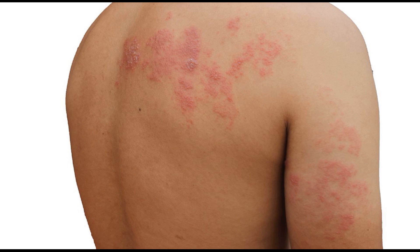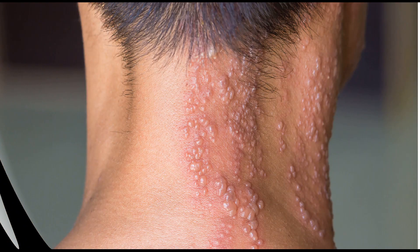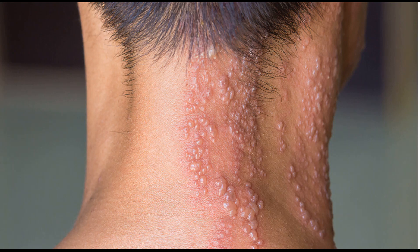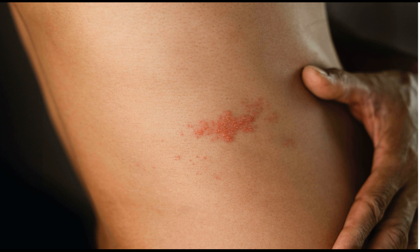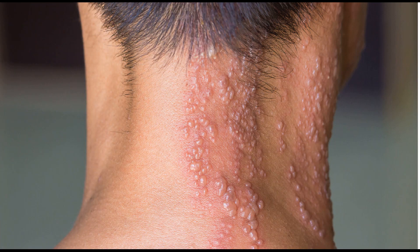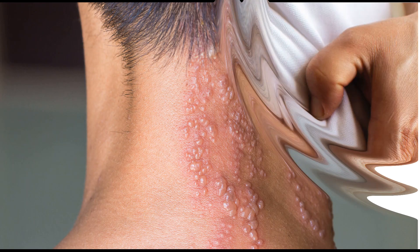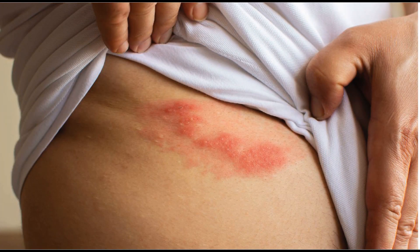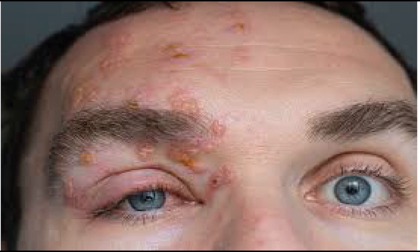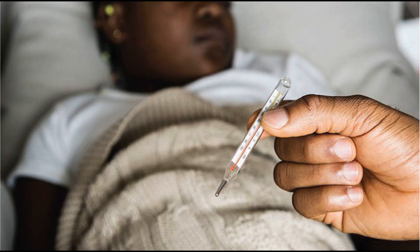The symptoms of herpes zoster infection usually begin with a tingling or burning sensation in a specific area of the body, often on one side. This is followed by the development of a red rash that turns into clusters of fluid-filled blisters. The rash is typically confined to one side of the body and follows the path of the affected nerve. Individuals with shingles also experience fever.